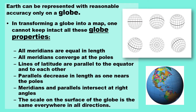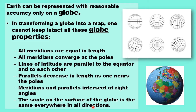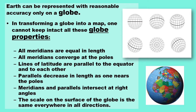It's only on a globe that you can maintain all of the globe properties. Between a globe and a map, some maps preserve these properties and some don't — it entirely depends on their map projection. Maps may maintain one or more of these properties, but no map can maintain all of them. Only a globe can do that. The problem with globes is you can only see one half of the world at a time, and it's impractical to carry them around, so we have to use maps.